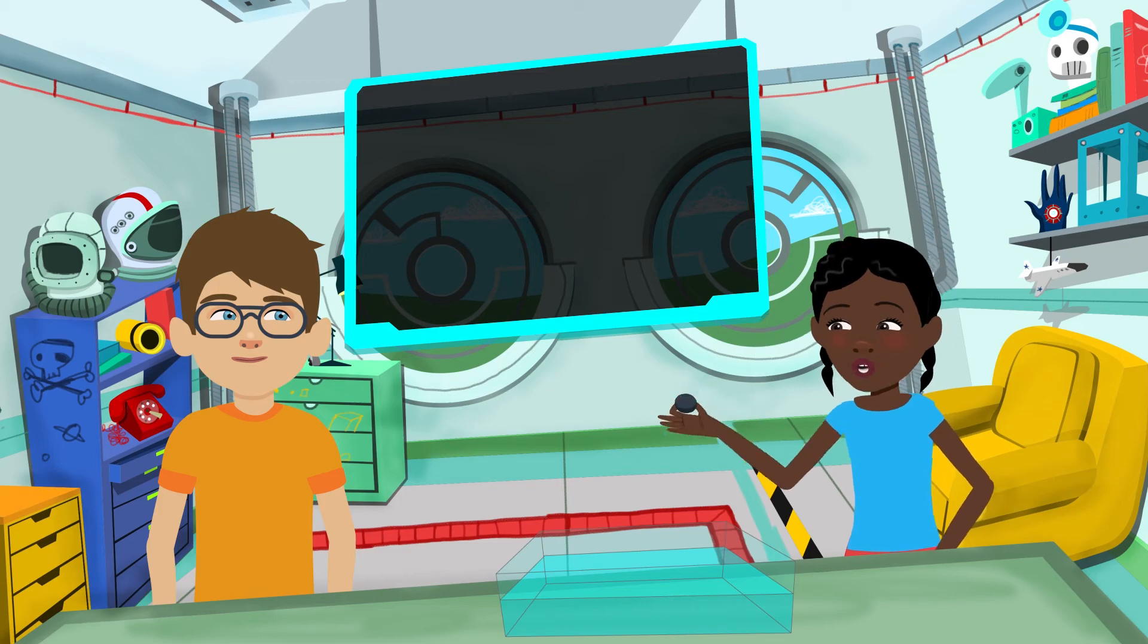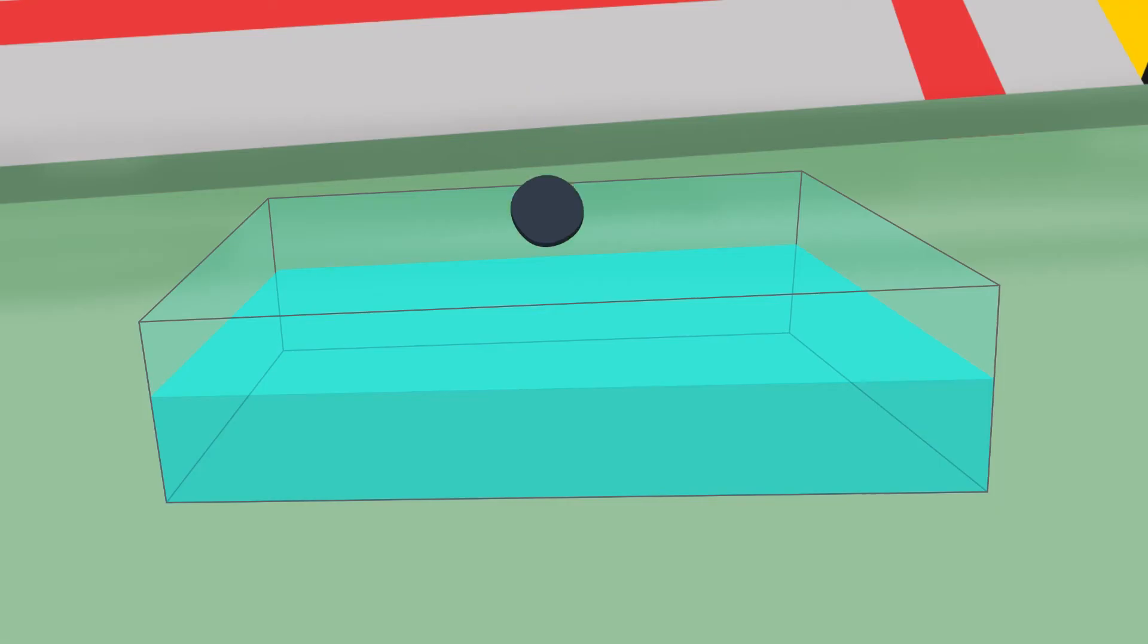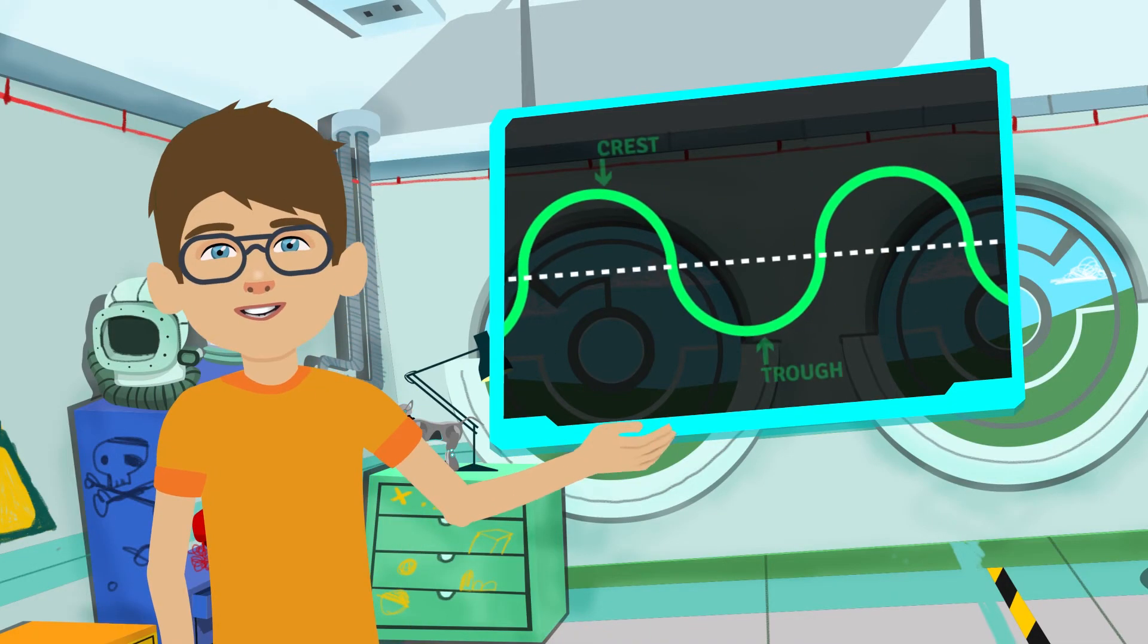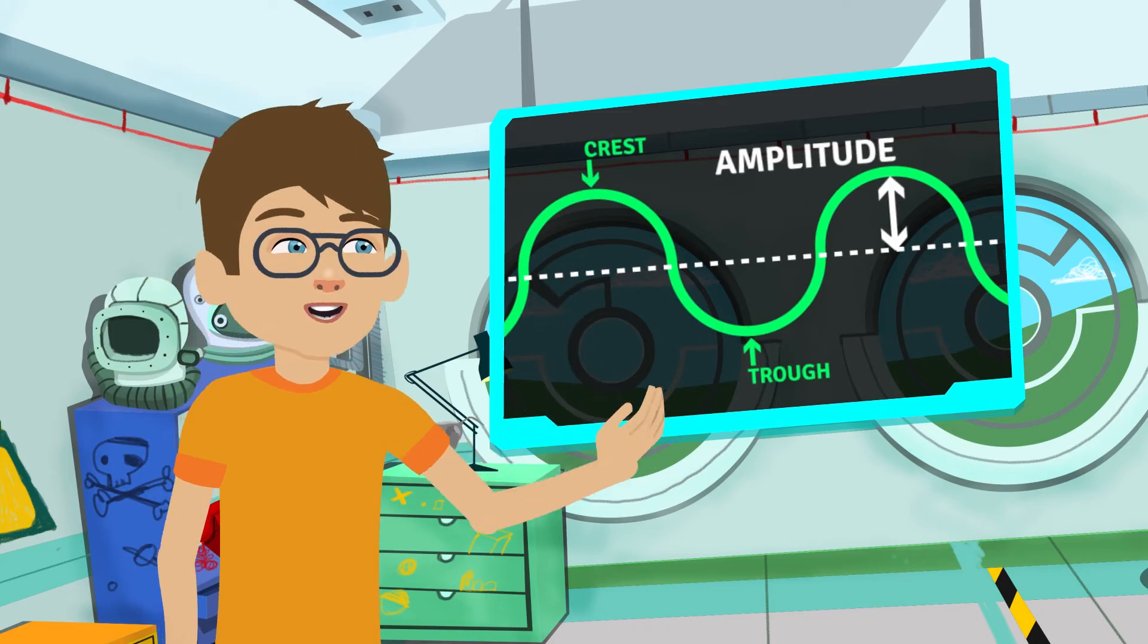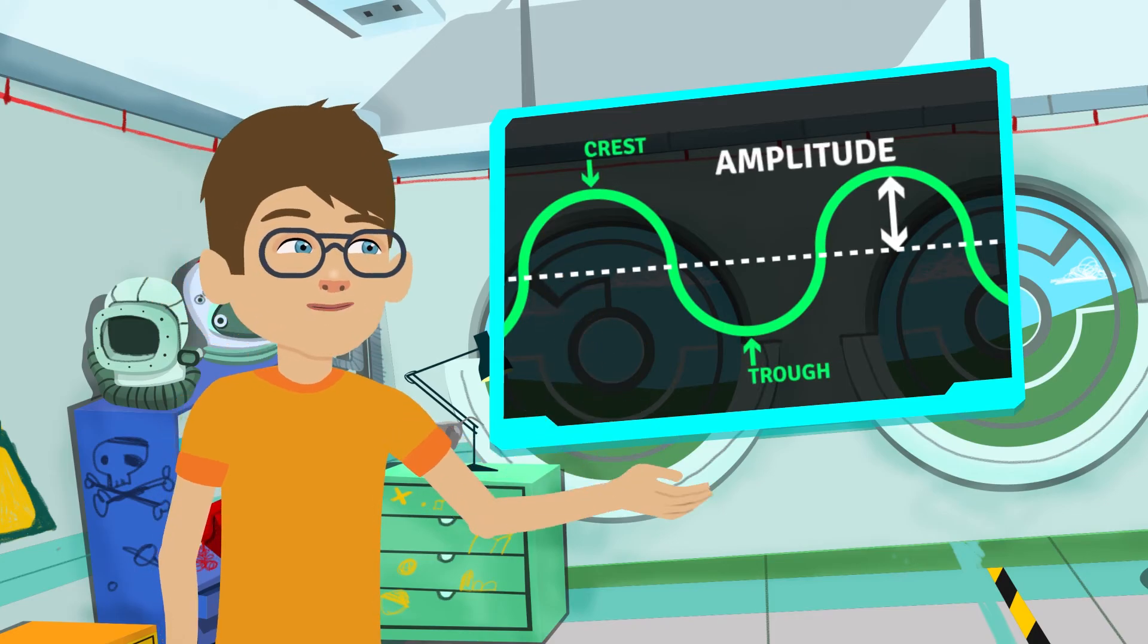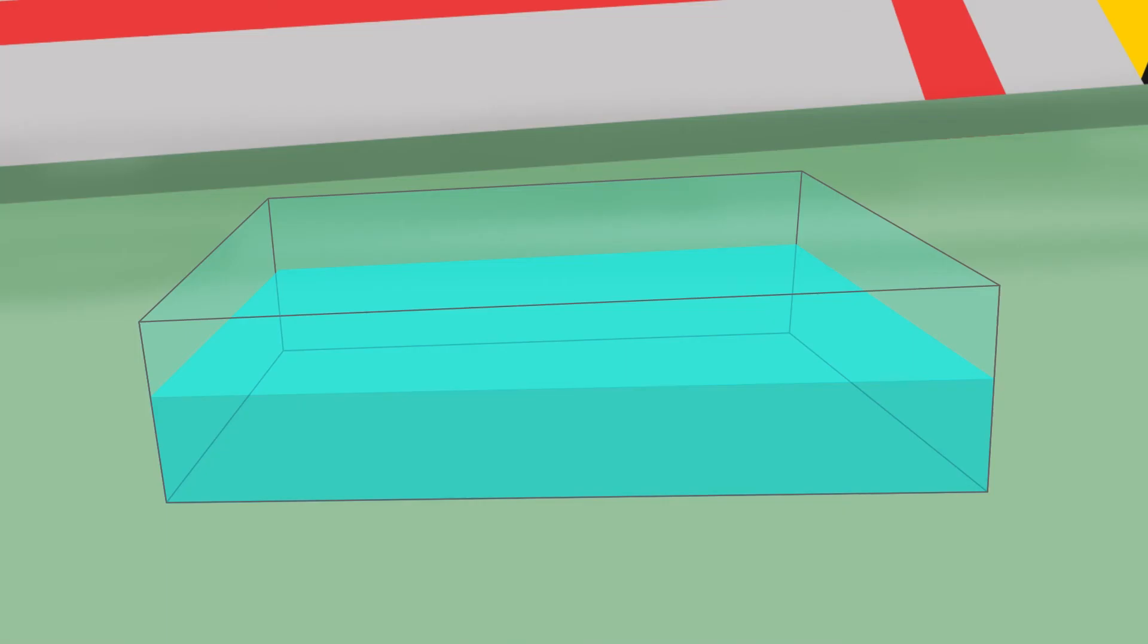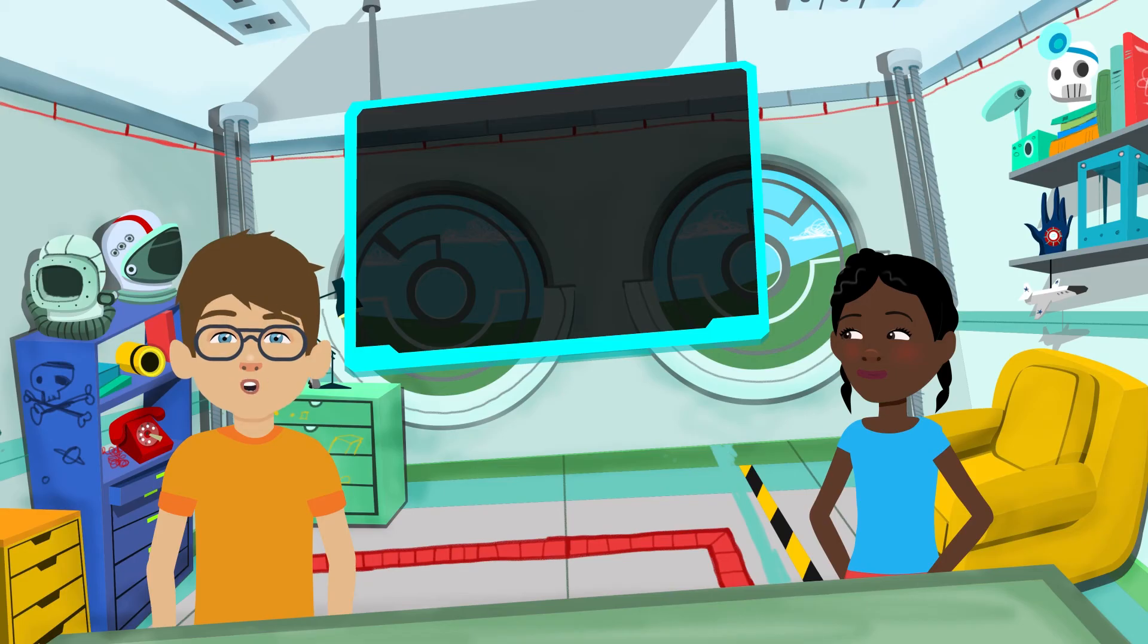When I drop this ball in the water, the wave it makes disturbs the flat surface. The amplitude is the distance from the crest or trough of the wave to where the flat surface was. The amplitude of the wave depends on how much energy or force is used. More energy, more amplitude.